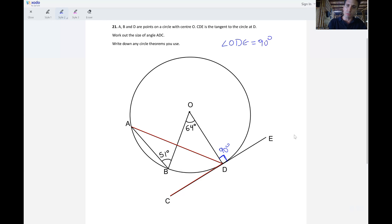Of course you would need to justify this. You would need to say that the radius and tangent meet at a right angle. That's normally how we say this. So to get full marks you would need to justify each step using a circle theorem.